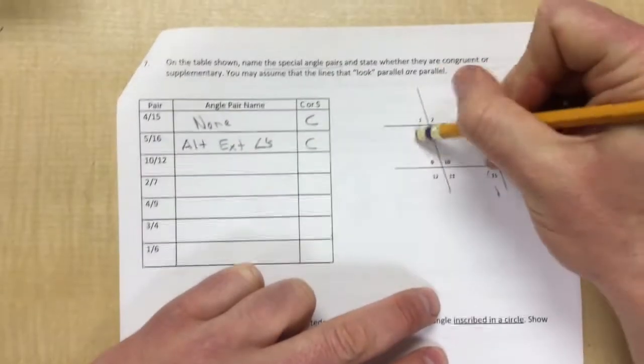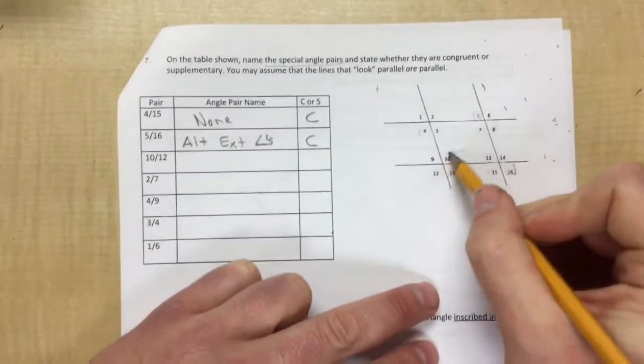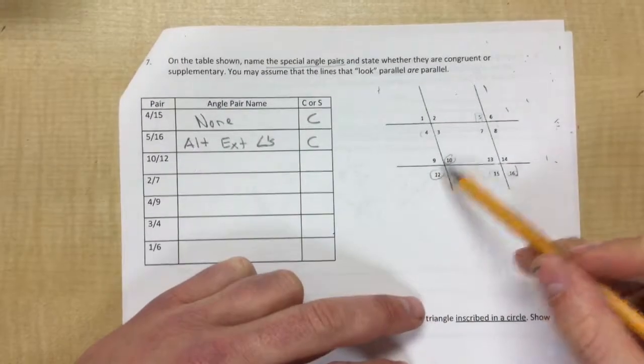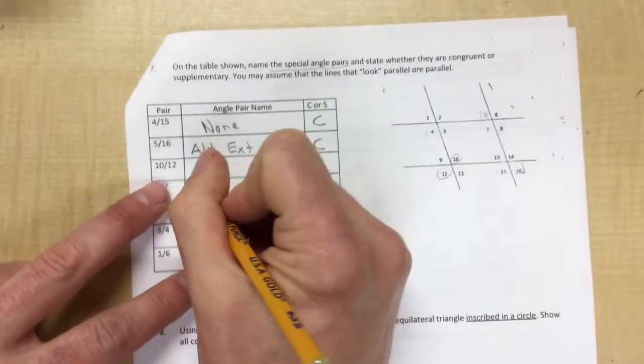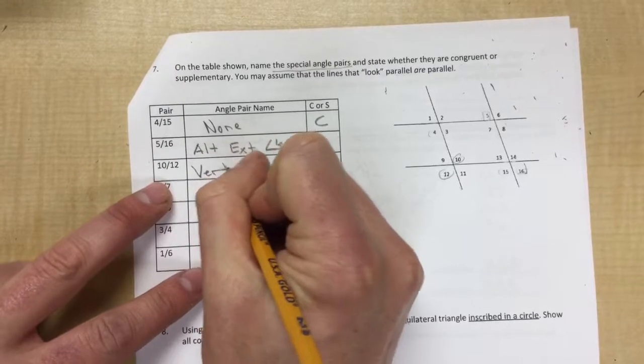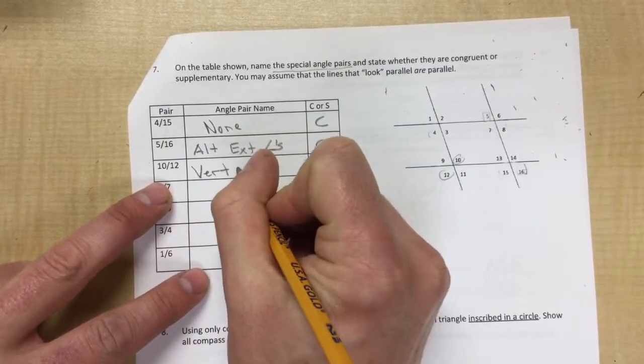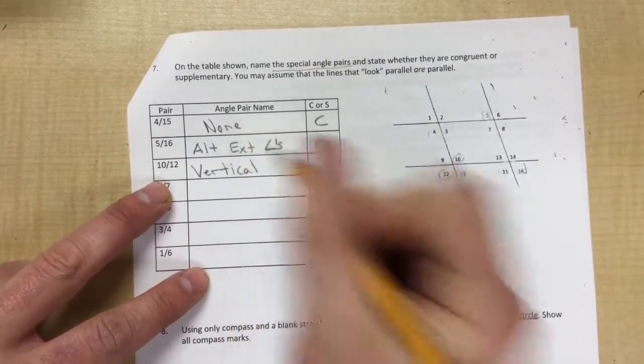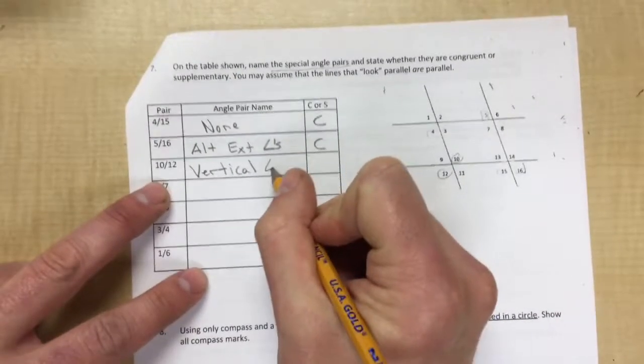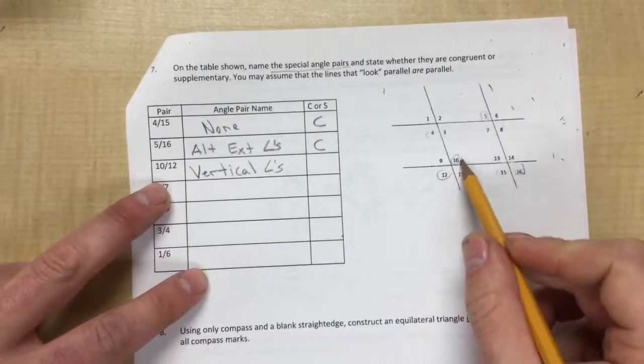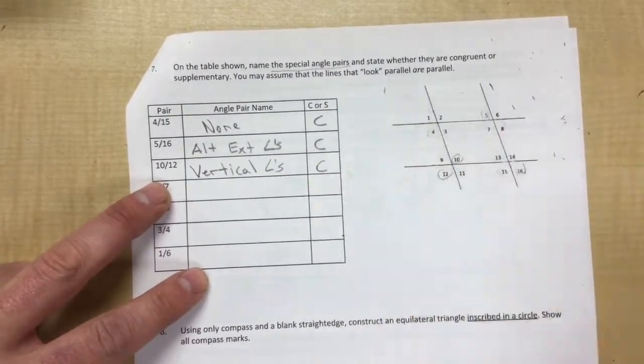So the next one is 10 and 12. So 10 and 12. They are right across from each other. And we have learned that those are called vertical. I'll just write it out because this was misspelled a lot. Vertical angles. And they're both obtuse. So yes, they are the same.